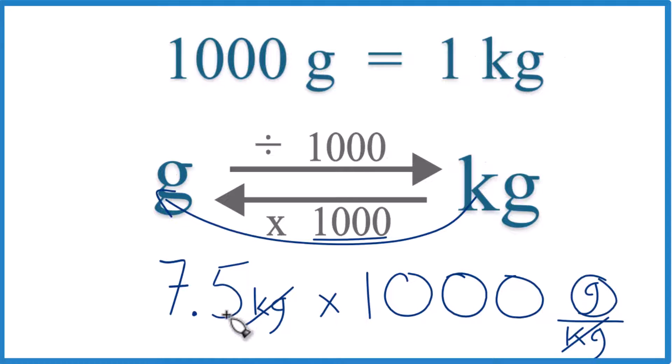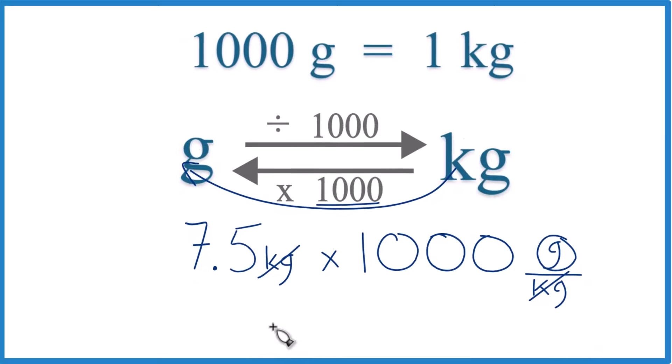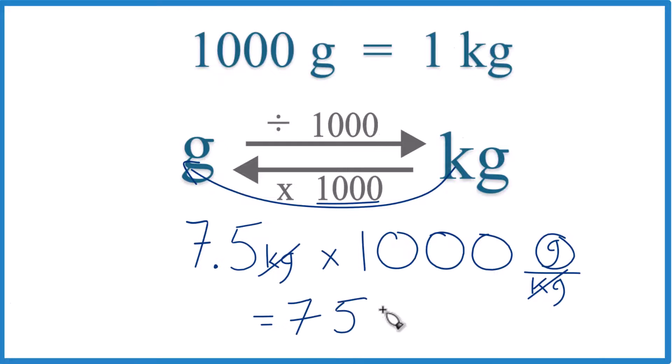So 7.5 times 1,000 grams equals 7,500 grams. So in answer to our question, when we convert 7.5 kilograms to grams, we get 7,500 grams.